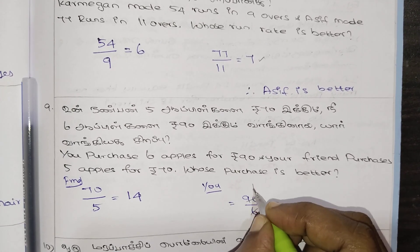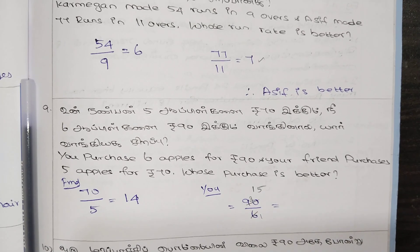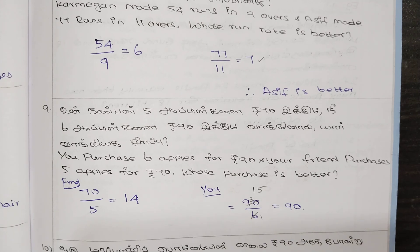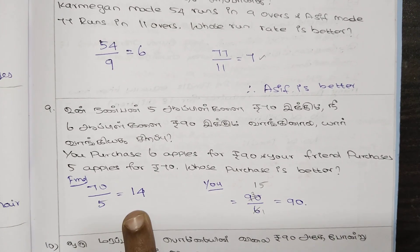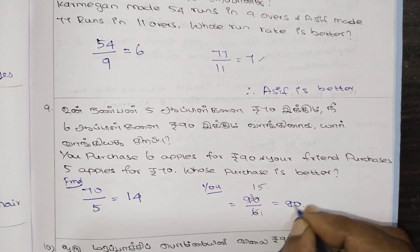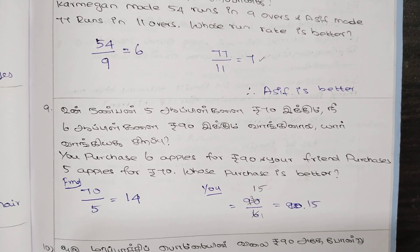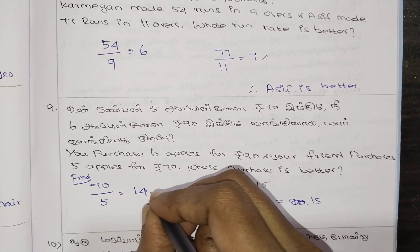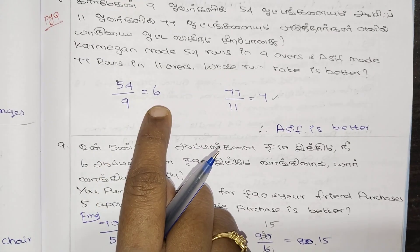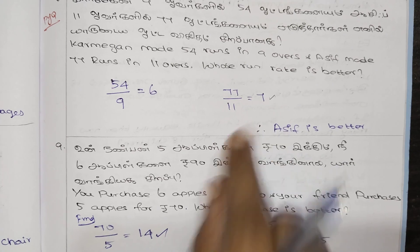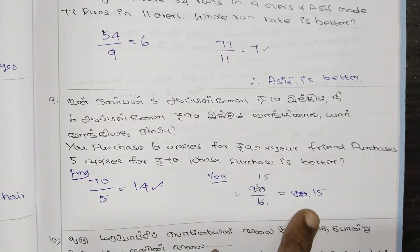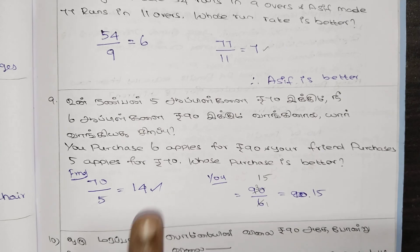Let's calculate: 6 into 5 is 30. 15 into something gives us the comparison value. After calculation, your friend's purchase is better — the unit price for your friend is lower. So your friend's deal is the better purchase.